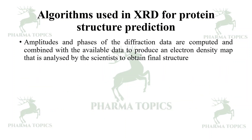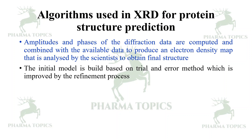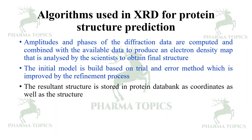If the coordinates of a similar protein are available to match the experimental data, amplitudes and phases of diffraction data are computed and combined with the available data to produce an electron density map analyzed by scientists to obtain the final structure. The initial model is built based on a trial and error method, which is improved by the refinement process. The resultant structure is stored in the Protein Data Bank as coordinates as well as the structure.